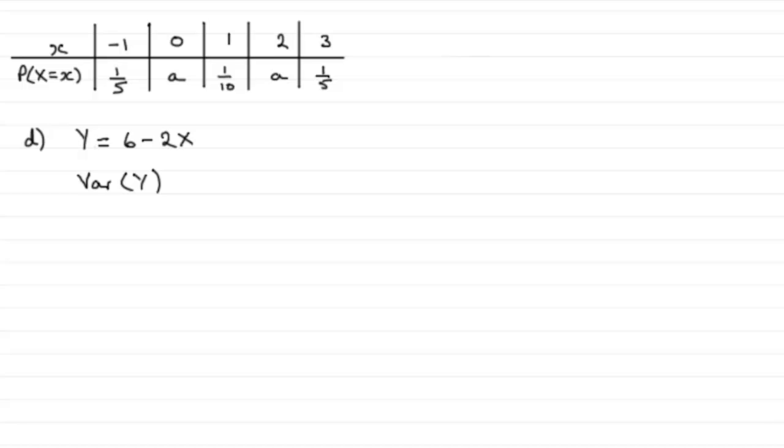Now this last part, we're given the random variable Y then equals 6 minus twice the random variable X, and asked to work out the variance of the random variable Y.